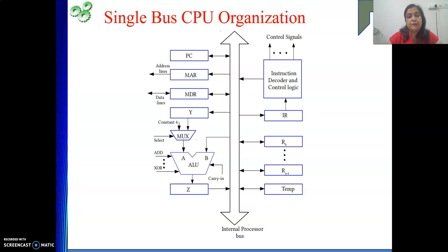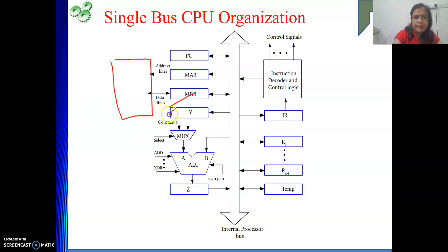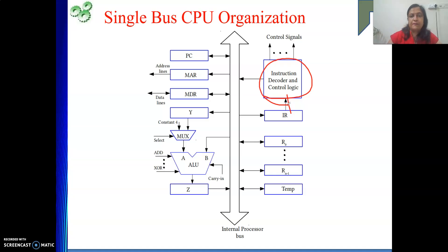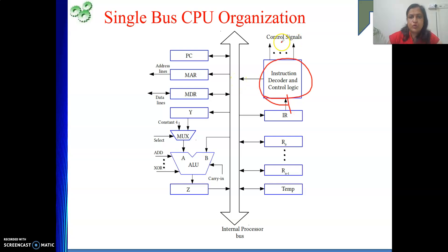The instruction comes from the memory module into MDR, then from MDR it is given to the IR. The IR is internally connected to your decoder, so whatever is in the IR feeds into the decoder input. Based on the bit combination, the decoder produces various control signals. Those control signals go to the ALU or the registers, whatever needs to be activated or placed on the bus. The connections are not shown directly; we simply say control signals go to the appropriate component.